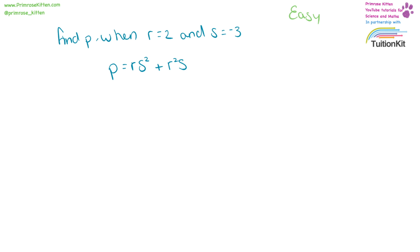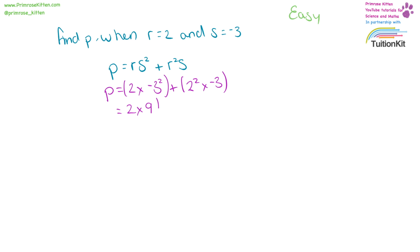Find p when r equals 2 and s equals minus 3. This is another one where you have to be really careful with the order you do things in and how you use your calculator. p equals r, which is 2, times minus 3 squared, plus r squared, so that's 2 squared, times minus 3. Minus 3 squared is 9, so that's 2 times 9, plus 2 squared is 4, times minus 3. 2 times 9 is 18, plus 4 times minus 3 is minus 12. 18 plus minus 12 is 6.